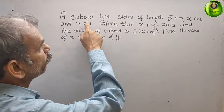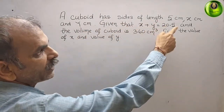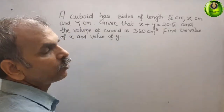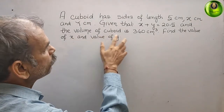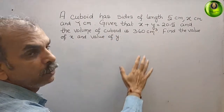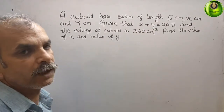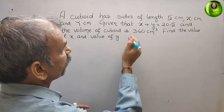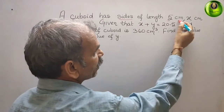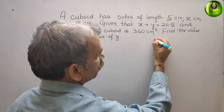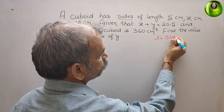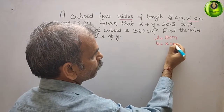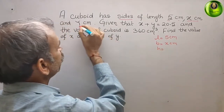The question is: a cuboid has sides of length 5 cm, x cm, and y cm. Given that x plus y is equal to 20.5 and the volume of the cuboid is 360 cm cubed, find the value of x and the value of y. They have given the sides: length is 5 cm, width is x cm, and height is y cm.